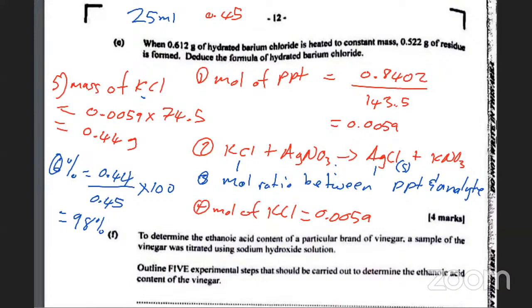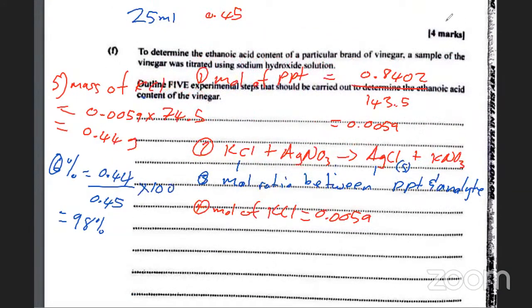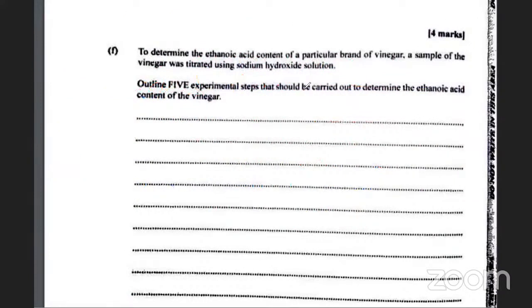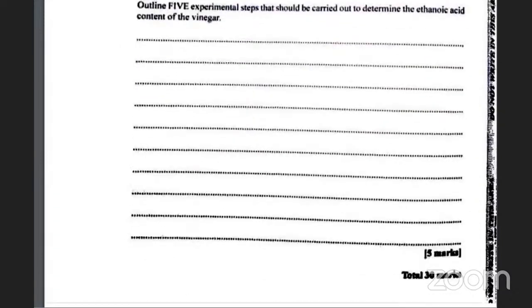That is it for precipitation gravimetry. To determine the ethanoic acid content of a particular brand of vinegar, a sample of the vinegar was titrated. I will post the answers to this question.